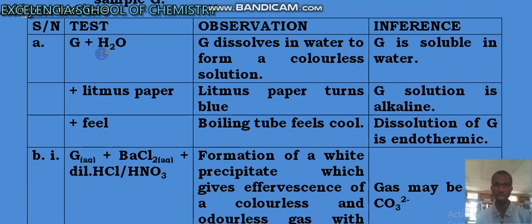G solution, that is whatever we have here plus litmus paper. Litmus paper turns blue. Red litmus turns blue, showing that G solution is alkaline.